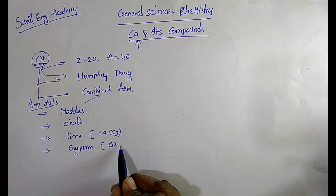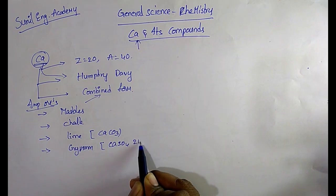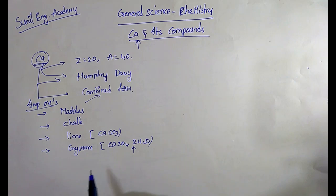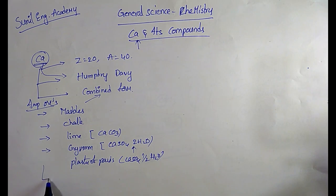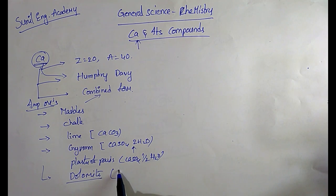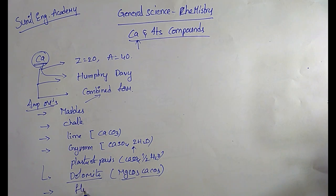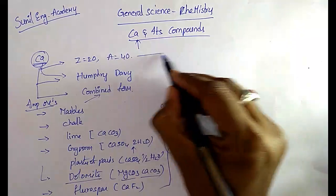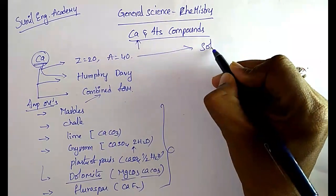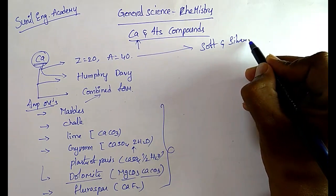Gypsum has the chemical formula CaSO₄·2H₂O; if it is half H₂O that is a different form. Dolomite, as I already mentioned in the previous class, is MgCO₃·CaCO₃ — it has two compounds. In the case of fluorspar, the formula is CaF₂. These are the important ores of calcium.